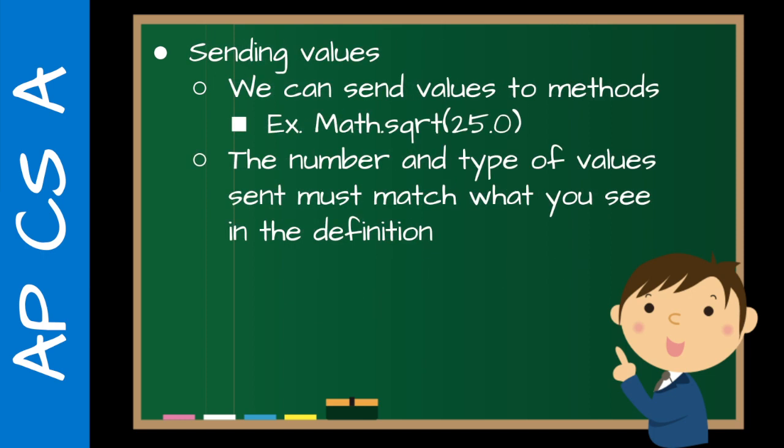Sending values. So we can send values to methods. And as I mentioned, we've seen this before with math.sqrt. So in this case, we're sending the value 25.0 to the static method SQRT. And the number and type of values sent must match what you see in the definition. So if we were to look at the square root method definition in JavaScript somewhere, we would see in there double something, because it accepts a double.